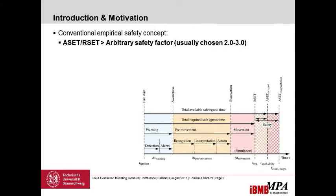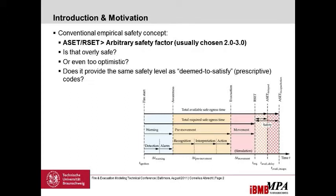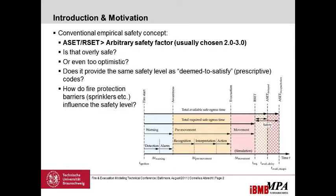We can see that the whole problem involves a lot of parameters. The question that arises if we use that methodology and those empirical safety factors is: is that overly safe, or is it too optimistic? We don't really know. Does it provide the same safety level as deemed-to-satisfy codes? That's the question we usually have to answer for performance-based design.